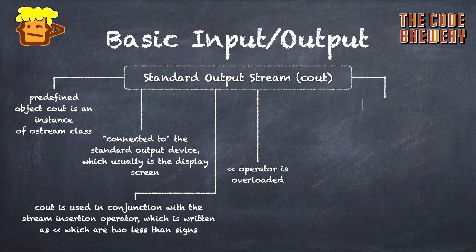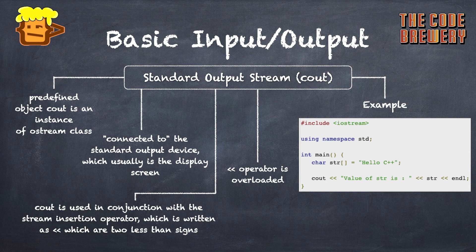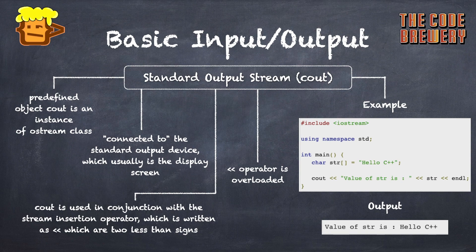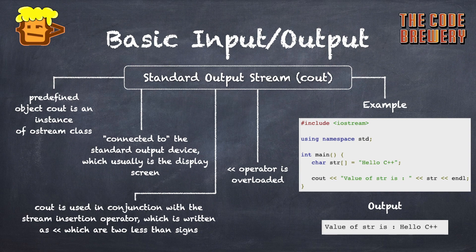The C++ compiler determines the data type of the variable to be output and selects the appropriate stream insertion operator to display the value. The operator is overloaded to output data items of built-in types: integer, float, double, strings, and pointer values. The insertion operator may be used more than once in a single statement, and endl is used to add a new line.